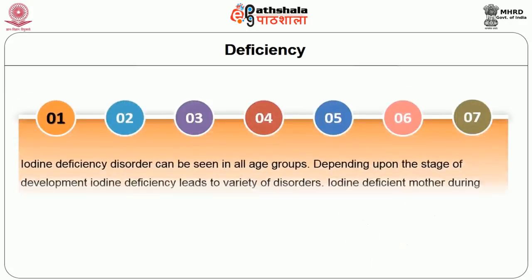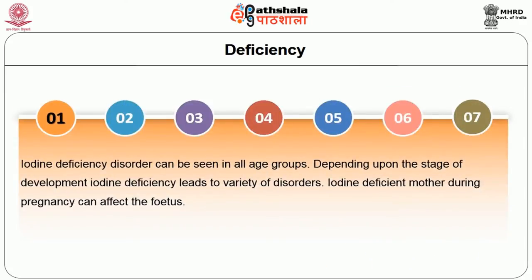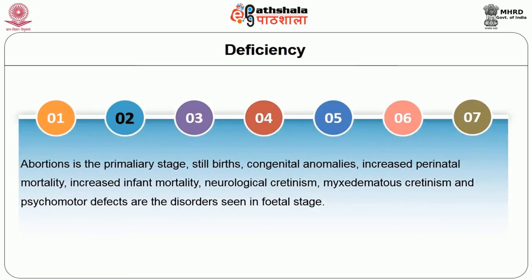Iodine deficiency disorder can be seen in all age groups. Depending upon the stage of development, iodine deficiency leads to a variety of disorders. Iodine deficiency disorder can affect the fetus, leading to abortion, stillbirths, congenital anomalies, increased perinatal mortality, increased infant mortality, neurological cretinism, myxedematous cretinism and psychomotor defects. In the neonatal stage, it causes neonatal goiter and neonatal chemical hypothyroidism.